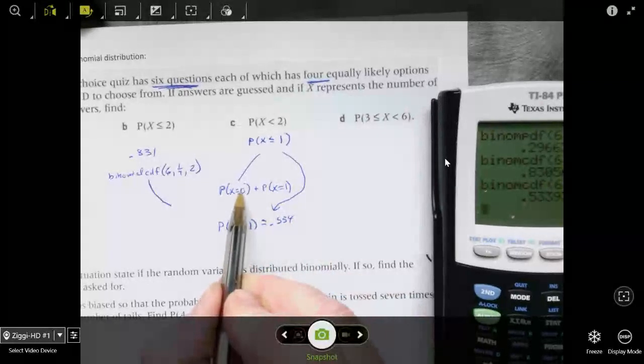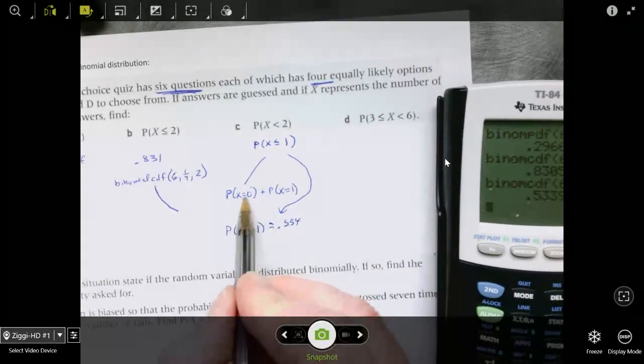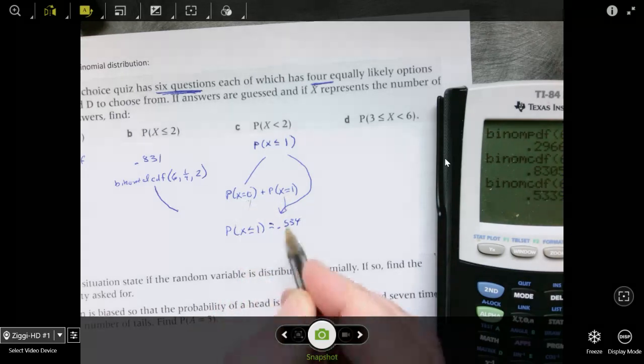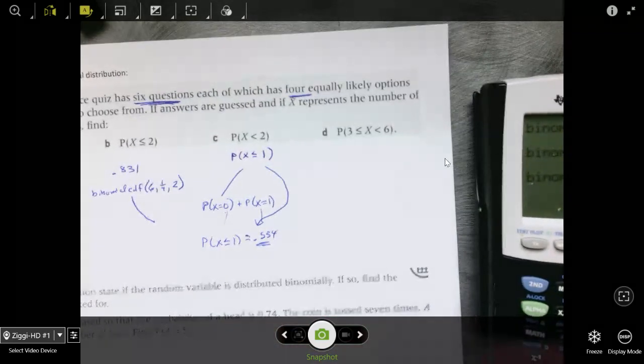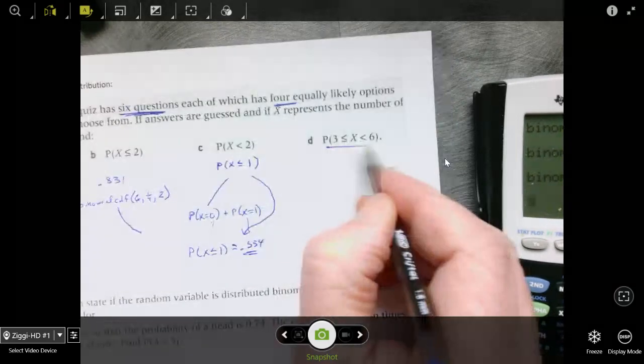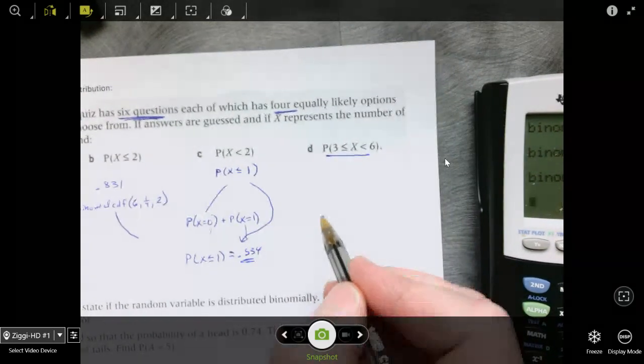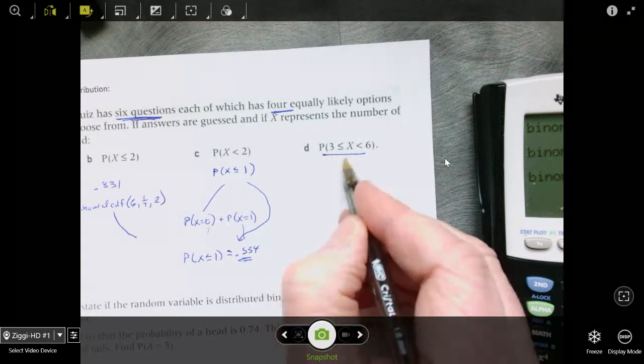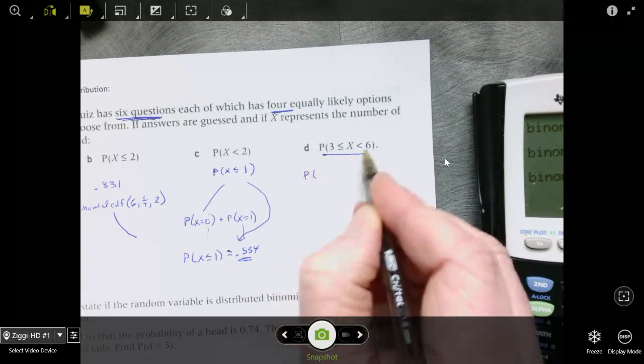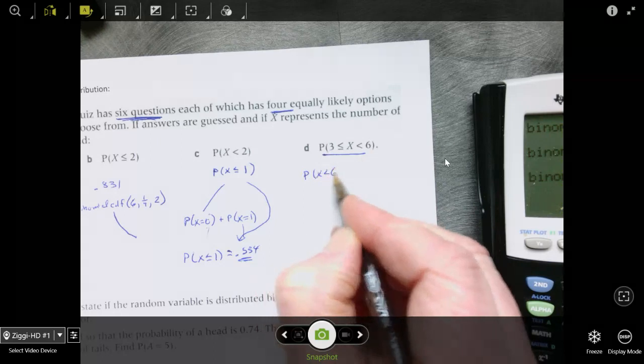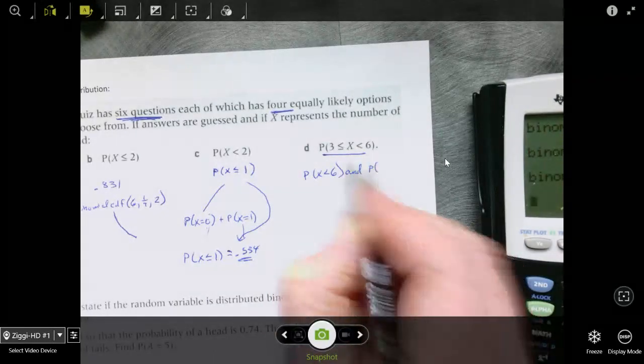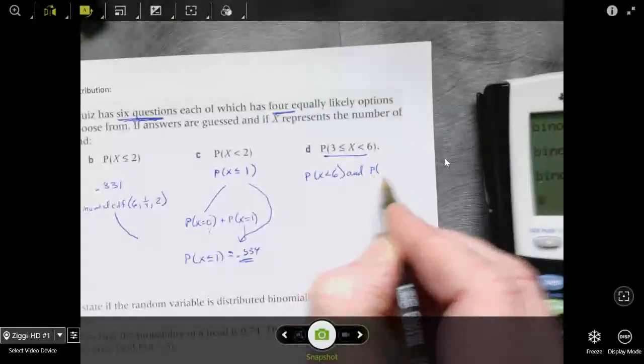Okay, so the tricky ones are inequalities when you have this range of values. You have to split this inequality up. So this is an and. I want the probability that x is less than 6 and the probability that x is greater than or equal to 3. Well, greater than or equal to 3 means I can subtract. So I want to say and not, which is subtraction. x is less than 2.